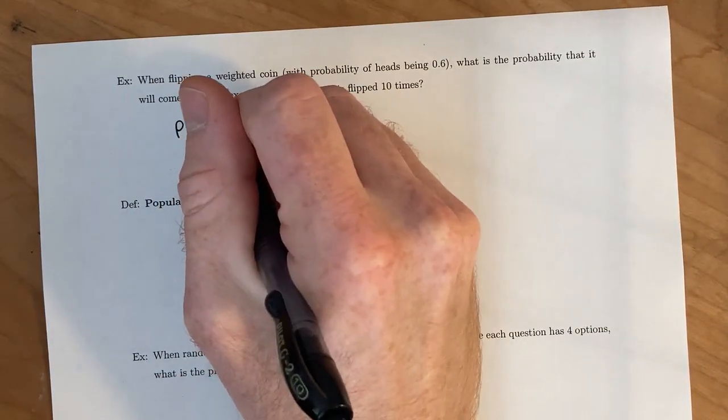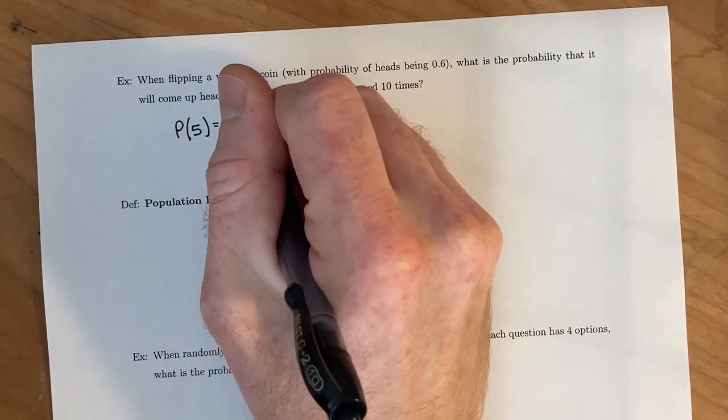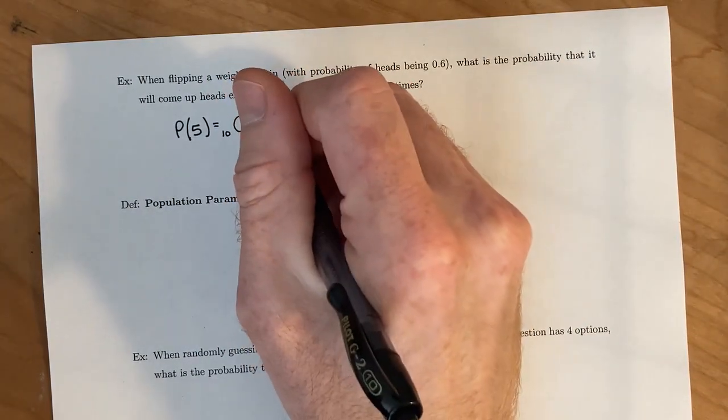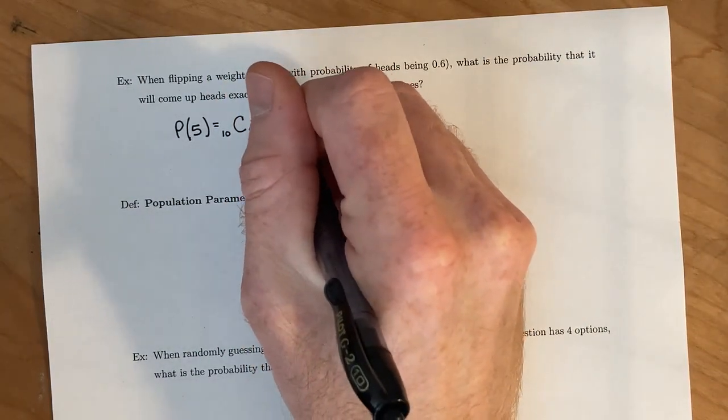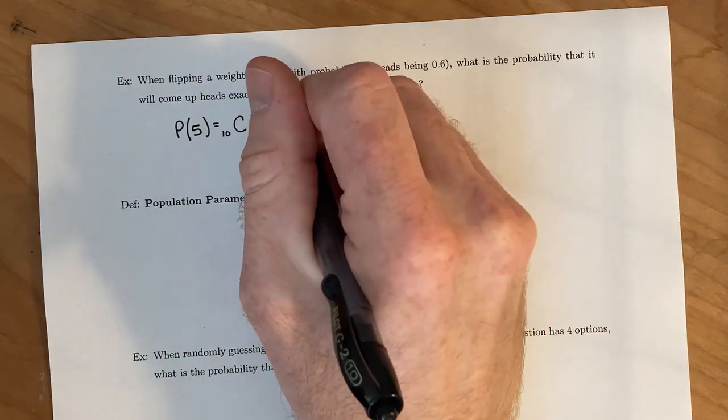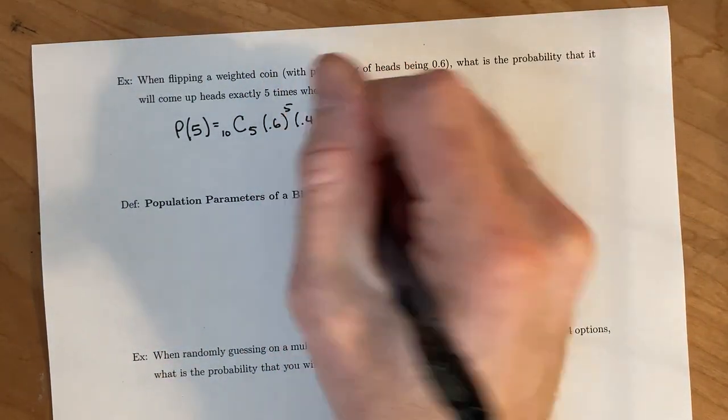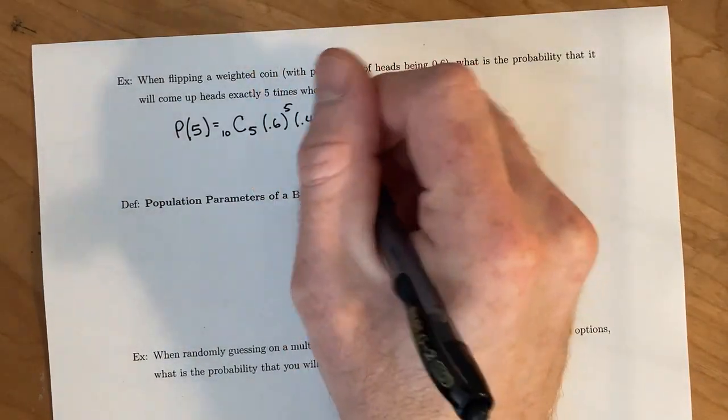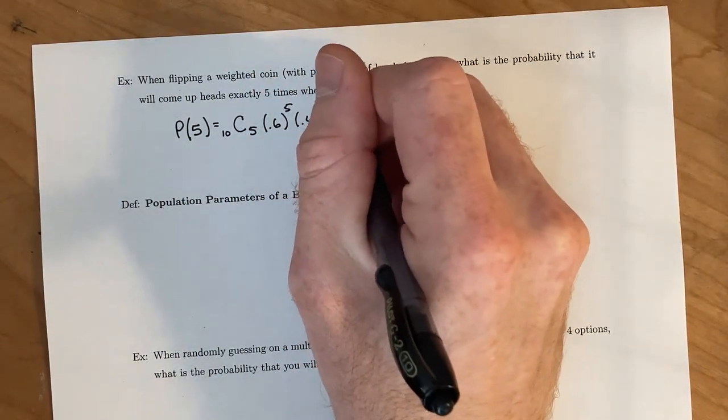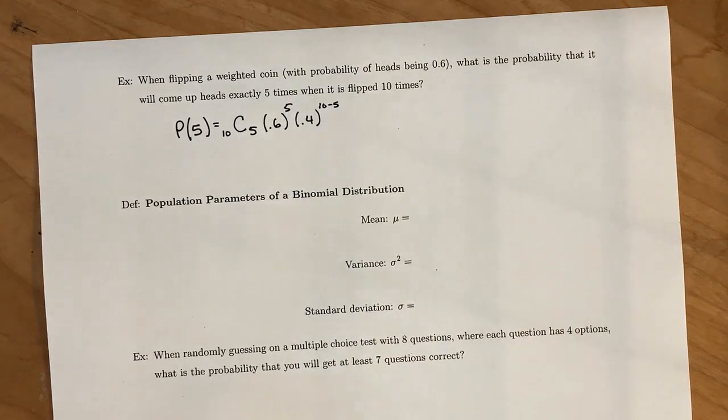that was 10 choose 5, the probability of success which is 0.6 to the 5th, times the probability of failure which is 0.4, to the 10 minus 5. So that's the general setup here.